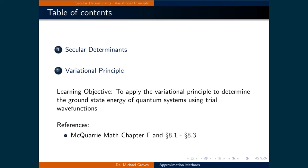This lecture will be broken down into two parts. In the first part, we will introduce what is a secular determinant, as it will be used in the near future to solve for unknowns in systems of equations. In the second part, we will introduce the variational principle and use it to solve the ground state energy of quantum systems using trial wave functions.